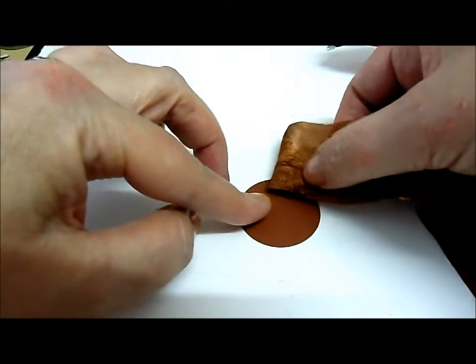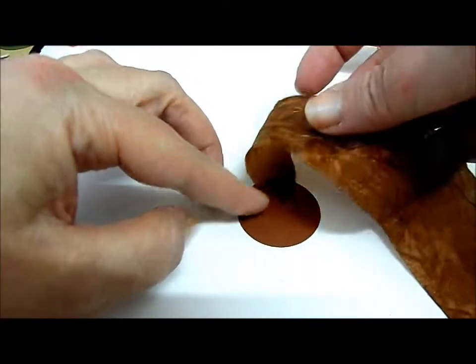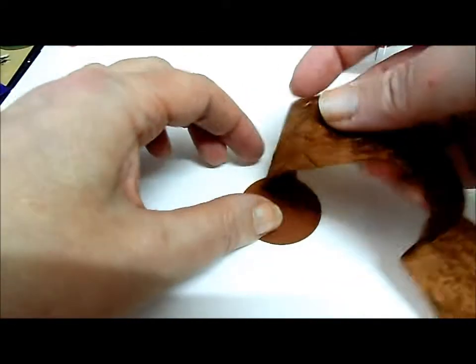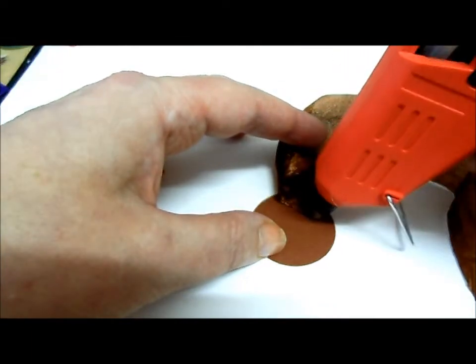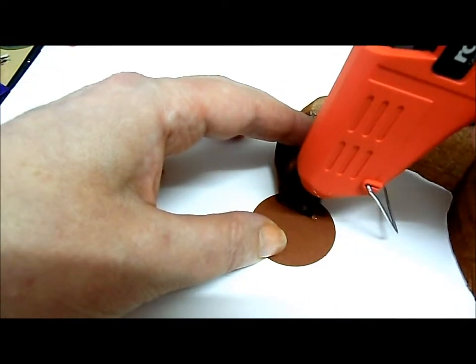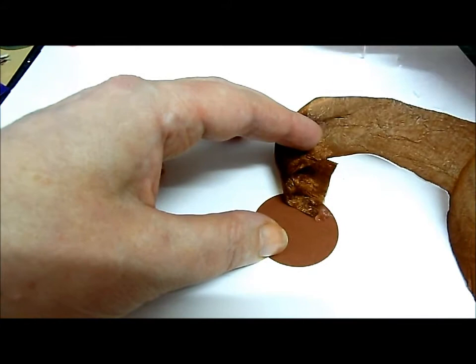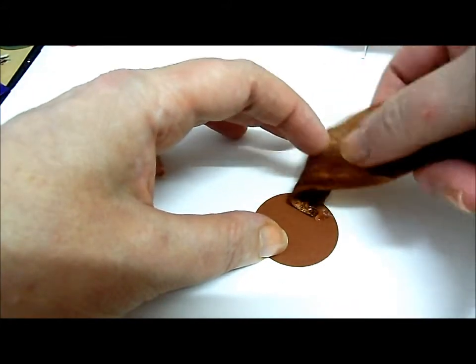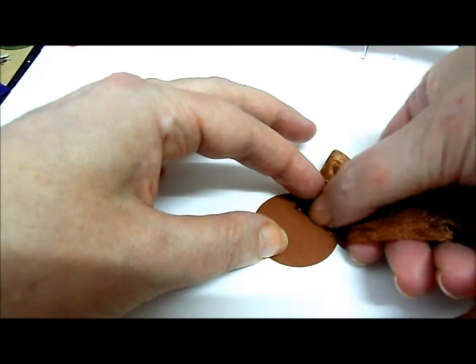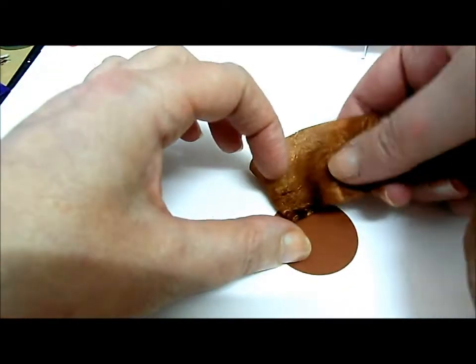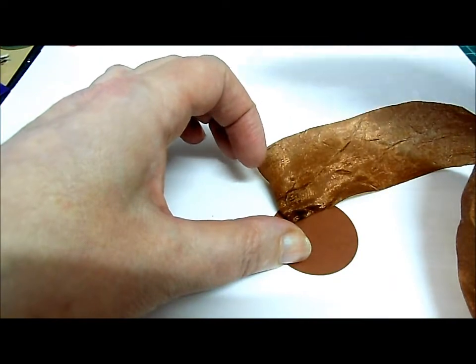And then I'm going to ruffle it and pleat it up as I'm going. So I'm always going to be working back on myself. I'll try and let you see what I'm doing as I'm going. So another dot and there we go, I'm just going to work that round and pleat it up as I'm going.